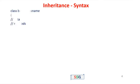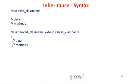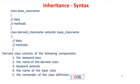The next one is inheritance syntax. The syntax for inheritance is: class, base class name — which contains data and methods — then class, derived class name, extends keyword, base class name, then data and methods in the derived class. The derived class consists of: the keyword class, name of the derived class, keyword extends, the name of the base class, and the remainder of the class definition.